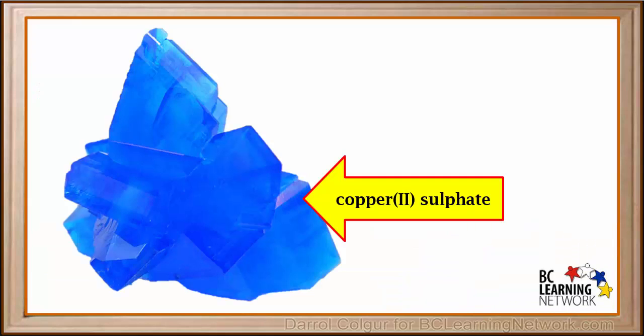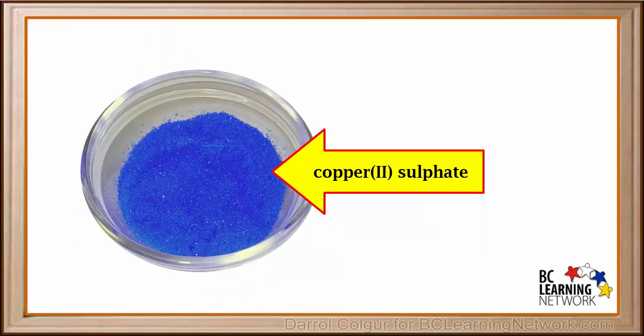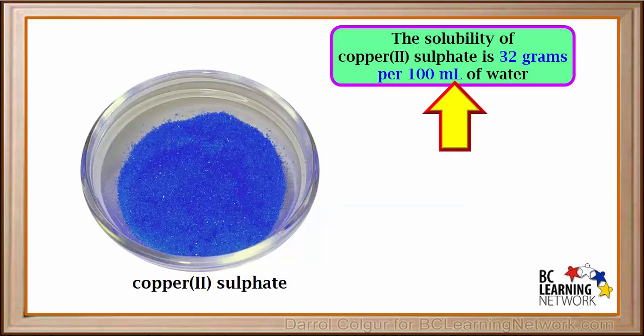This attractive blue crystal is made up of a compound called copper sulfate. Here is some copper sulfate that has been ground into small crystals. If we look up copper sulfate on the internet and search for its solubility, we find its solubility is 32 grams per 100 milliliters of water.